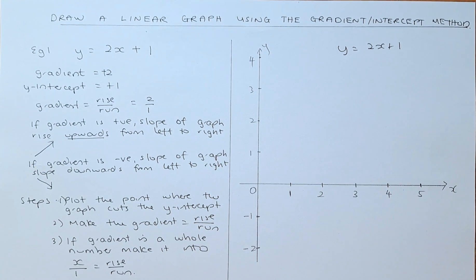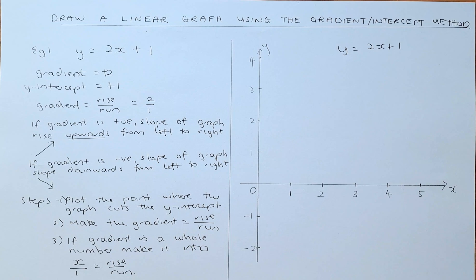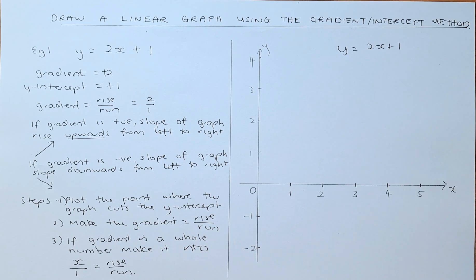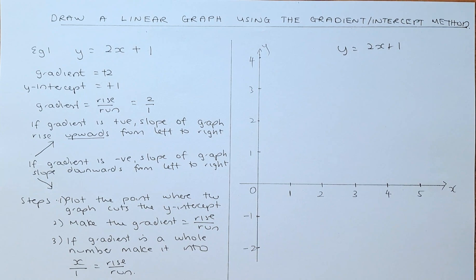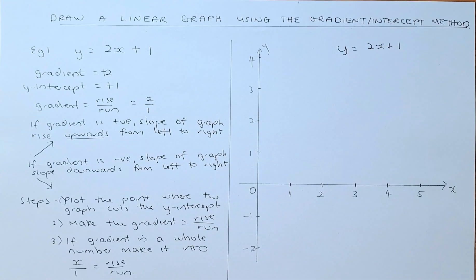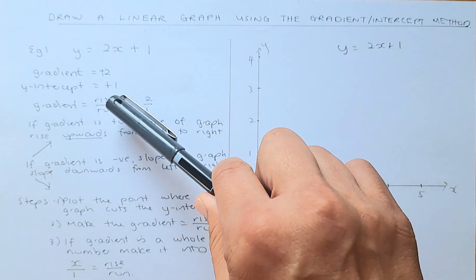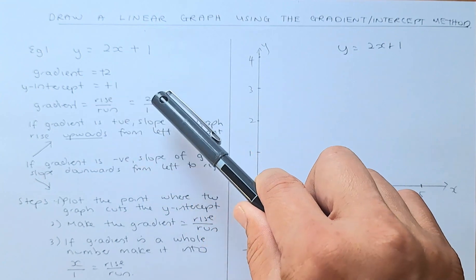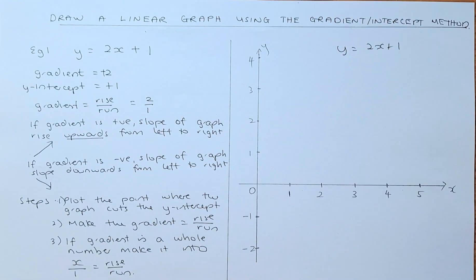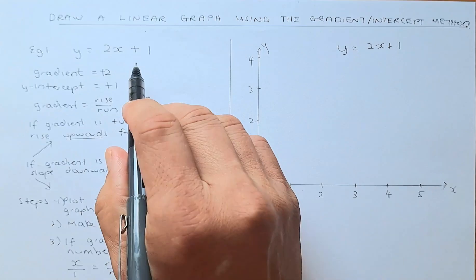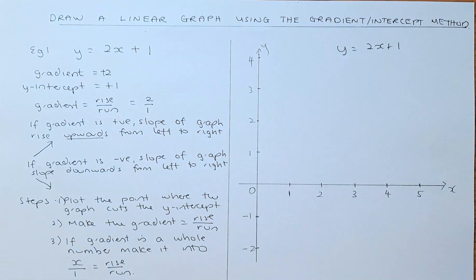Suppose we are going to draw the graph y equals 2x plus 1. First you need to know what is the gradient and what is the y-intercept. The gradient is the slope and it is the number with the x, so in this case it is 2. For this method, you express the gradient as rise over run, so 2 becomes 2 over 1. The y-intercept is the constant — the number on its own.